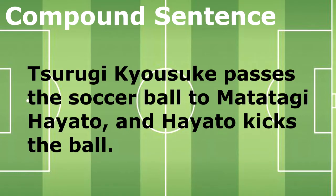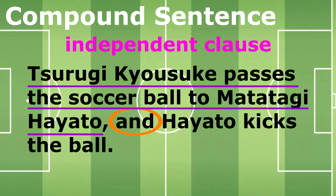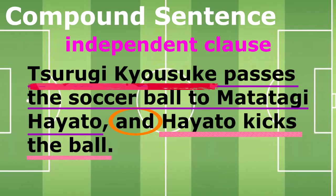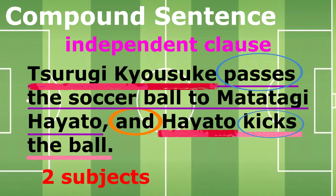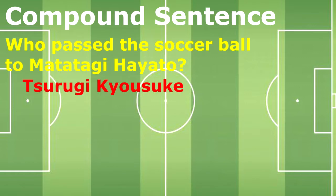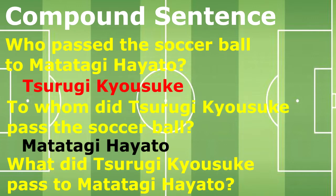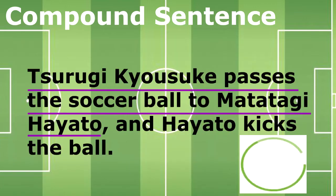As you read the sentence 'Churugi Kyosuke passes the soccer ball to Matatagi Hayato and Hayato kicks the ball,' you've encountered the conjunction 'and.' It is our clue. Through the word 'and,' we can determine the two independent clauses joined in the sentence. The first independent clause is 'Churugi Kyosuke passes the soccer ball to Matatagi Hayato,' and the second is 'Hayato kicks the ball.' Churugi Kyosuke is our first subject and 'passes' is our first verb. Hayato is our second subject and 'kicks' is our second verb — two subjects, two verbs. All questions about the first clause were answered, so it is really an independent clause.